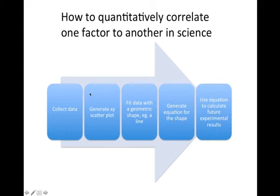So in science, we do this all the time. First we collect data, then we plot, usually a scatter plot, the variables together, the x and y, and see if they display any kind of correlation. When we see that they are correlated, we can then try to fit the data with a geometric shape, for example, a line. We then generate an equation for that shape, the line equation. And then we use that equation to calculate what we would get in the future for future experimental results that we don't have to perform anymore.